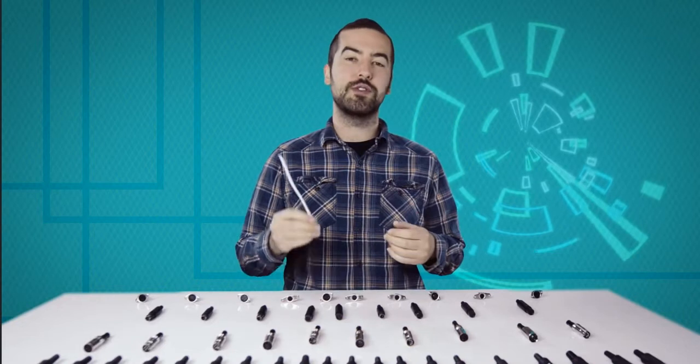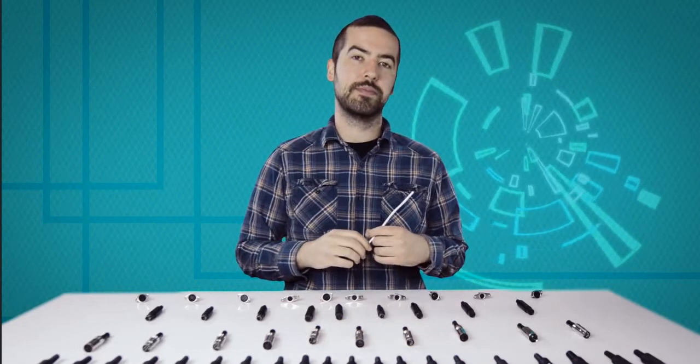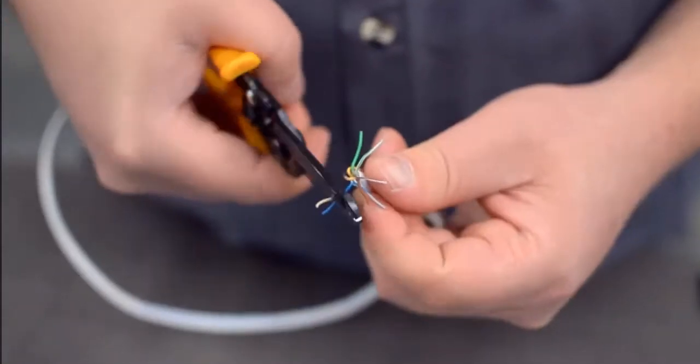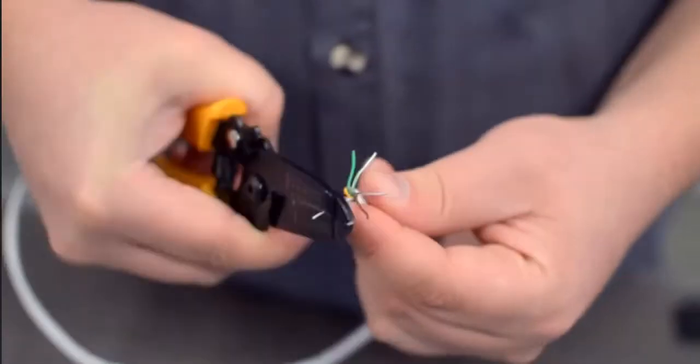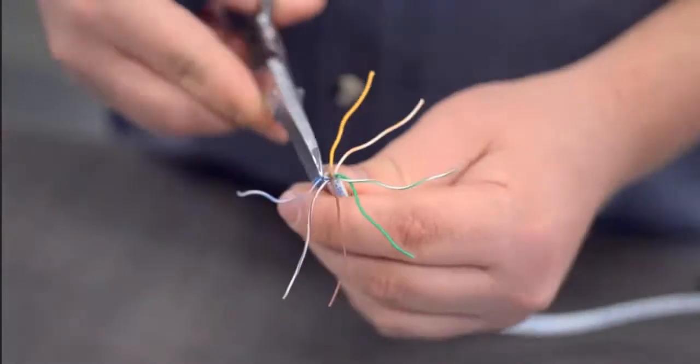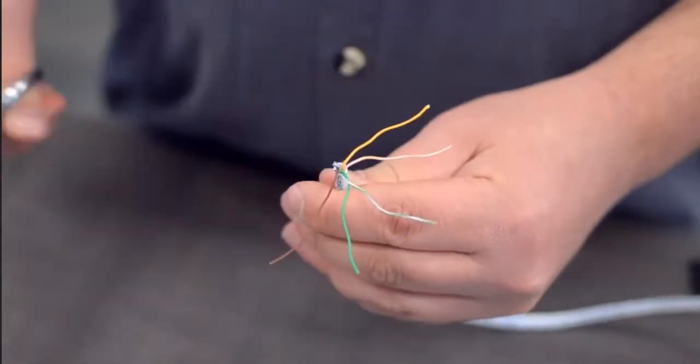For this example, we will be using CAT 5E cable. You will also need to strip the individual conductors. Trim off any additional conductors if needed.